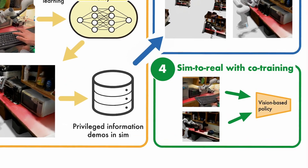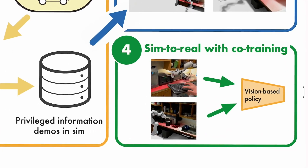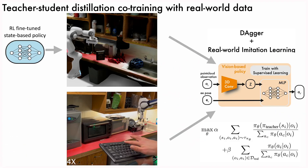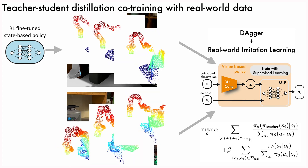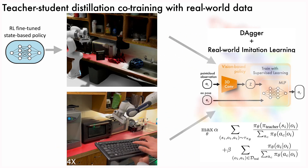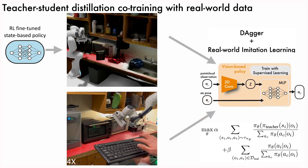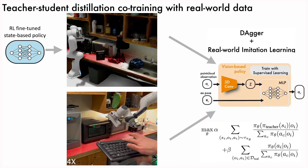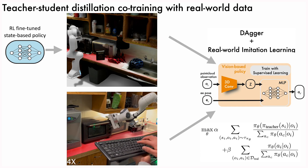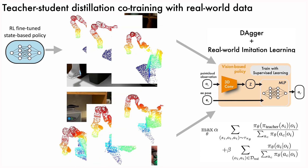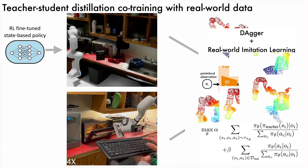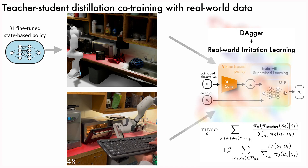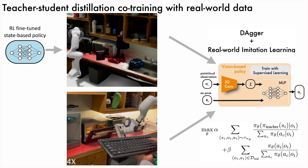The final step consists in transferring the state-based policy trained in simulation to one that takes point clouds obtained from a depth camera as input. We do teacher-student distillation with the addition of co-training on the previously collected real-world demonstrations, which, as we show with more details in the paper, narrows the sim-to-real gap.